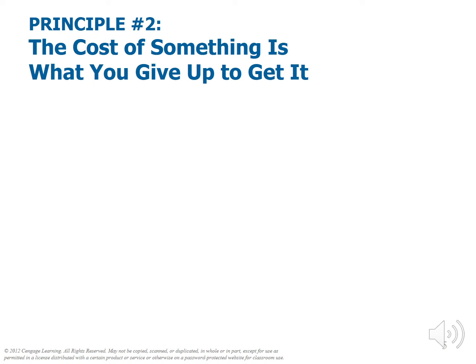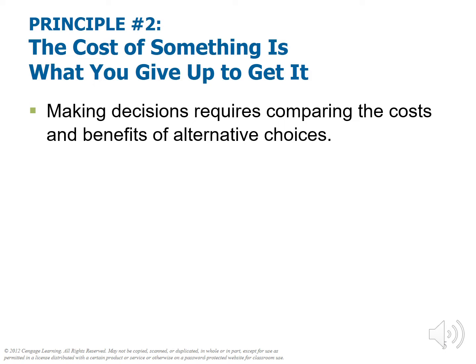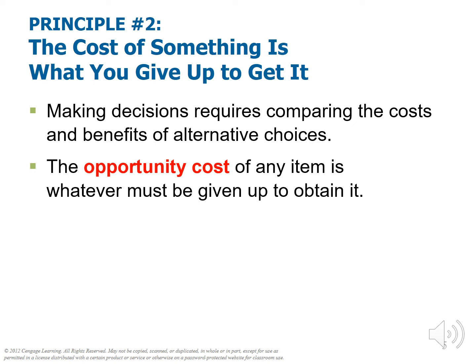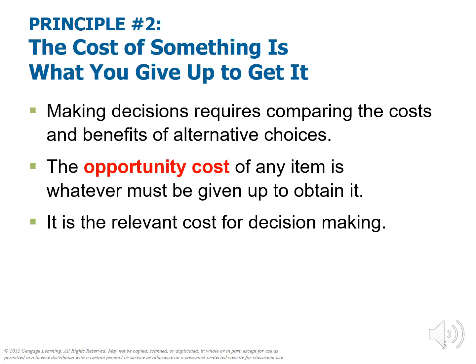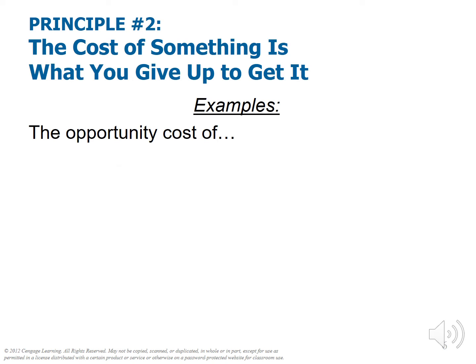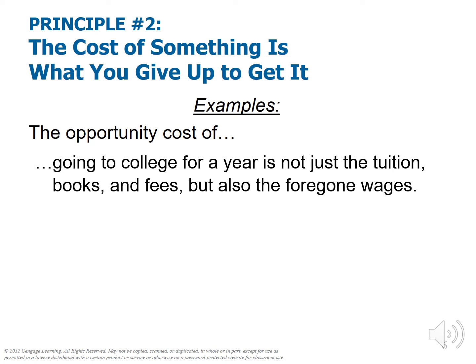Principle number two: the cost of something is what you give up to get it. Making decisions requires comparing costs and benefits of alternative choices. In economics, we have a special way of measuring cost, and the terminology that goes with it is opportunity cost. The opportunity cost of any item is whatever must be given up to obtain it. Opportunity cost is the relevant cost for decision-making. The opportunity cost of going to college is not just the out-of-pocket costs — tuition, books, and fees, which are the accounting costs. Probably the largest cost is foregone wages — while you're in this room, you're not working for a living.